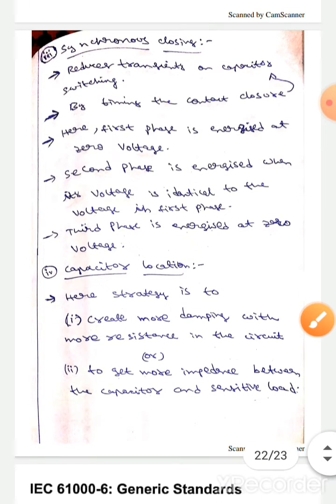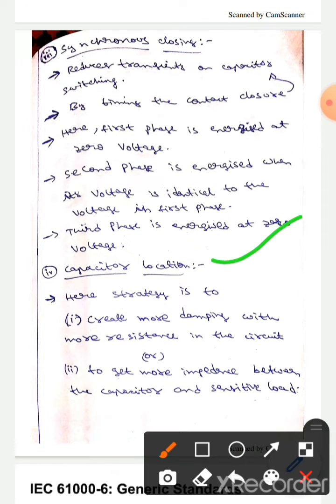The next one is capacitor location. Here strategy is to create more damping with more resistance on the circuit, and to get more impedance between the capacitor and the sensitive load.